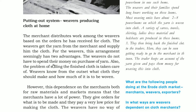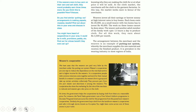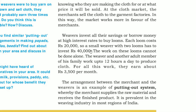This arrangement is called the putting-out system, where weavers produce cloth at home. The merchant distributes work among weavers based on orders received. From the weavers' perspective, this arrangement has certain advantages: they do not have to spend their own money to purchase yarn, and they don't have to find a market for the prepared material. Weavers know from the outset what cloth they should make and how much. But this dependence on the merchant — both for raw material and for the market — means merchants have power. They give orders for what is to be made and pay a very low price. The merchant then sells the cloth to the garment factories.